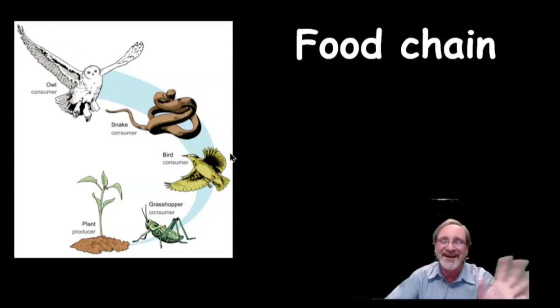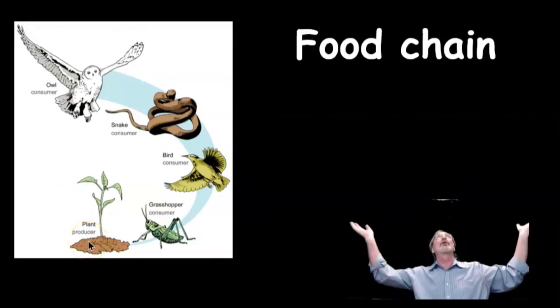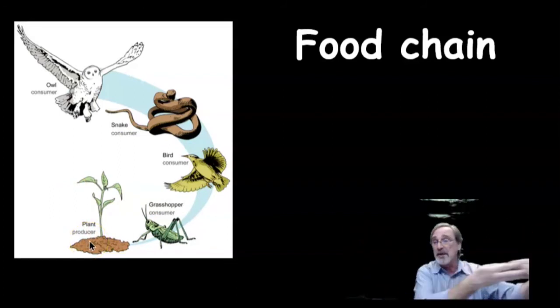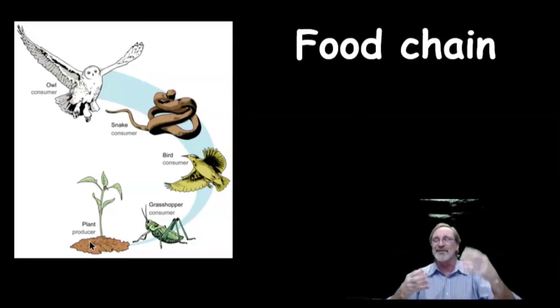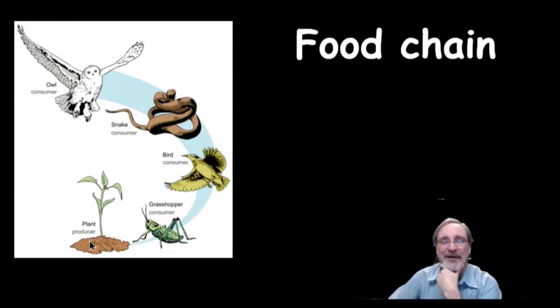There's another vocabulary there. This is called an autotroph, where the plant can make its own food. Auto means self, like an automobile. In the olden days you had a horse-drawn wagon that had to get pulled. Well, the automobile didn't need a horse, it could pull itself, and so that's where that name comes from - automobile.